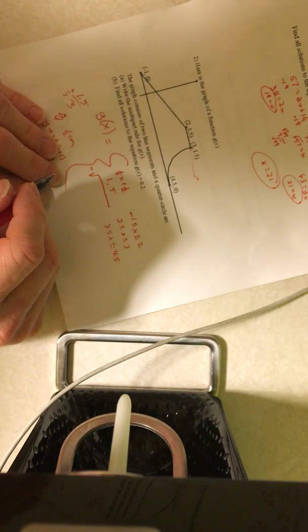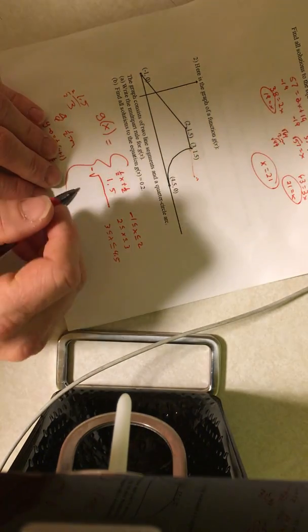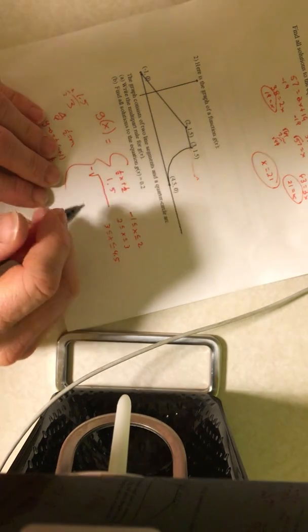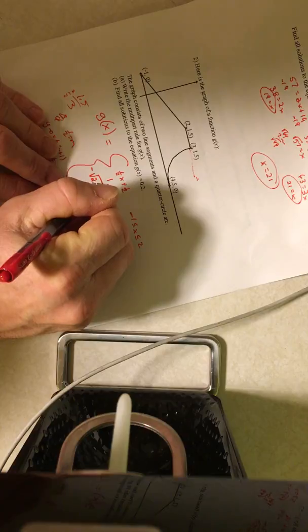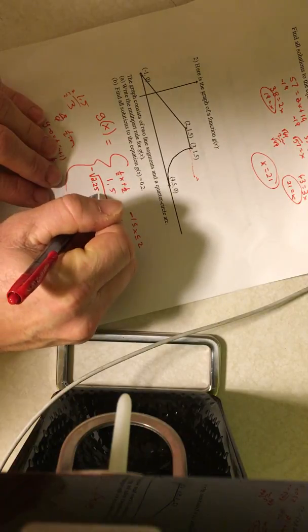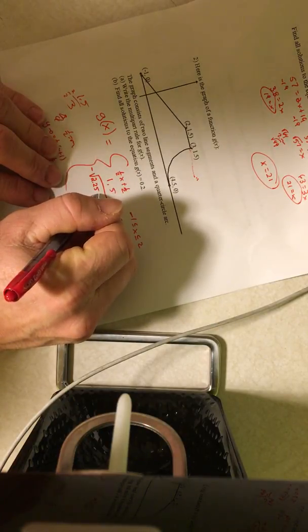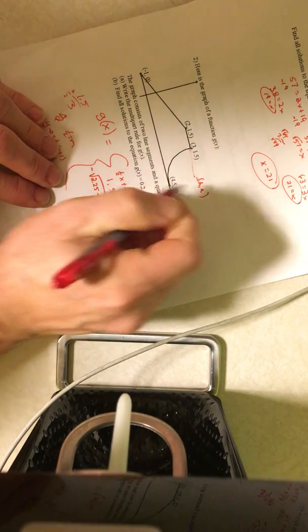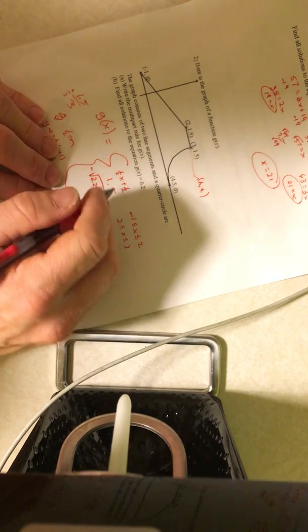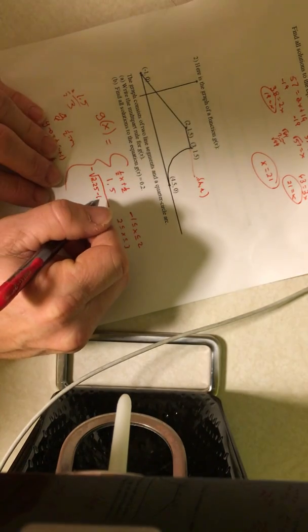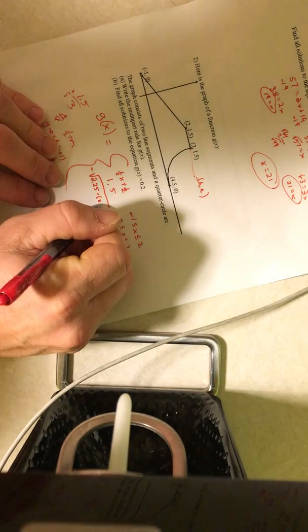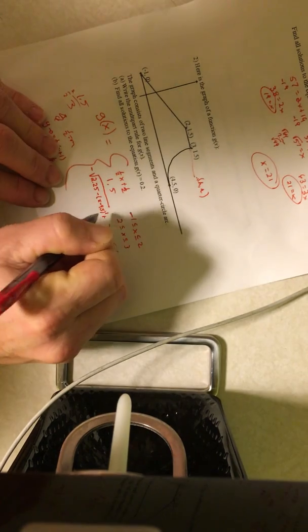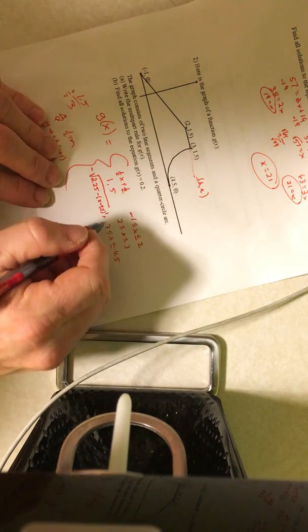1.5 squared is, what is that, 6.25? 2.25. 1.5 squared is 2.25. 2.25 minus x minus h. I need the h and the k for my circle, and my circle's h coordinate is 4.5, so 2.25 minus x minus 4.5 quantity squared plus my k value, and my k value is 1.5.